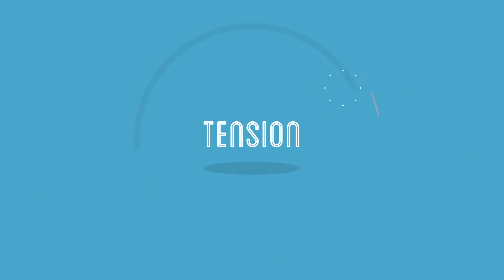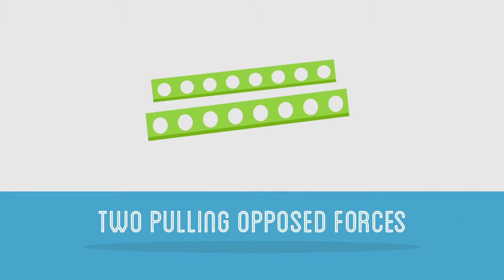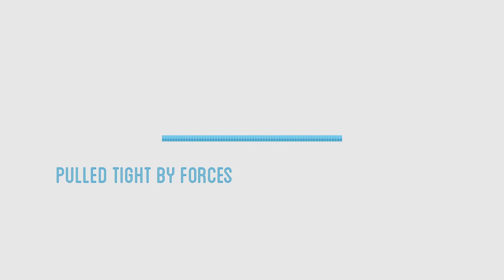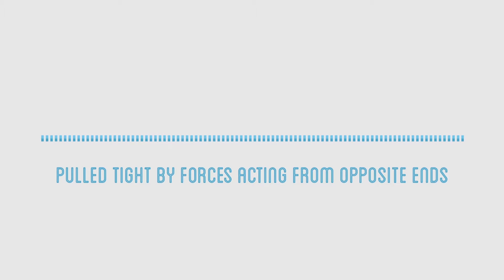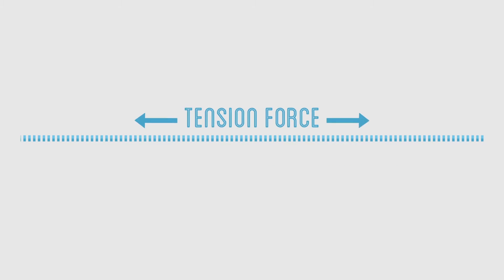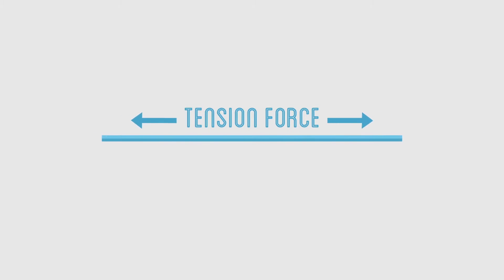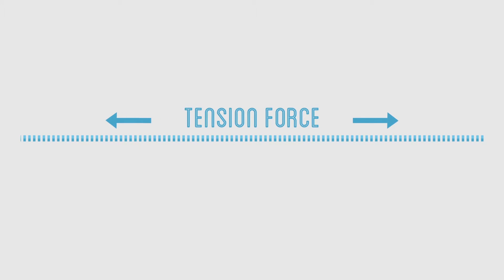Let's look first at tension. Tension refers to two pulling opposed forces. The tension force is the force that is transmitted through a string, rope, cable or wire when it is pulled tight by forces acting from opposite ends. The tension force is directed along the length of the wire and pulls equally on the objects on the opposite ends of the wire. If the pull wasn't equal then there would be movement.